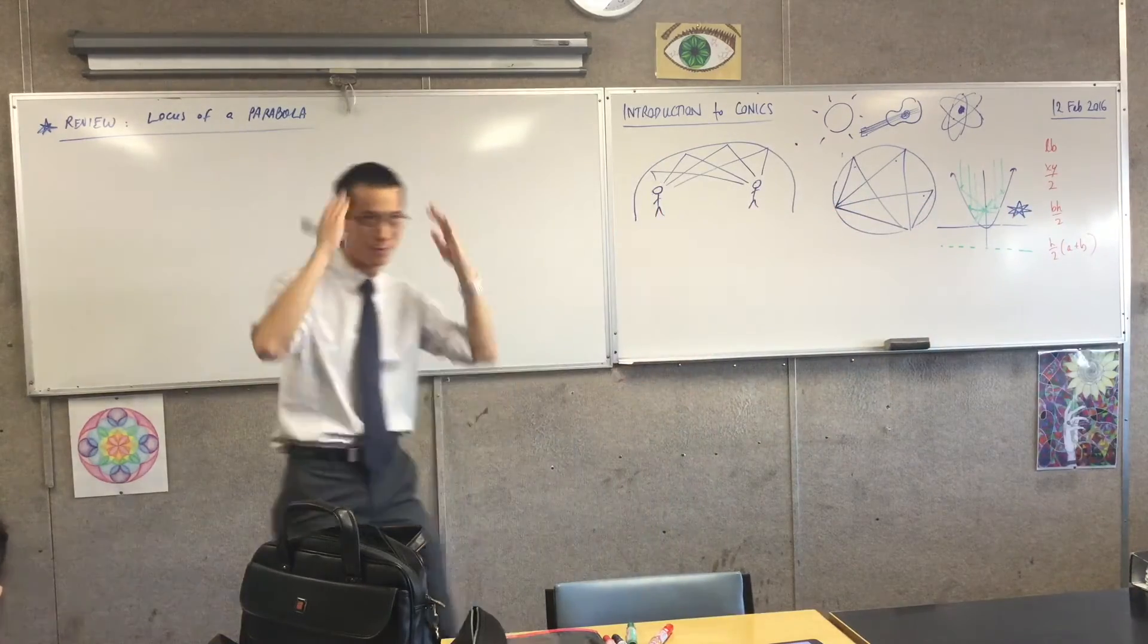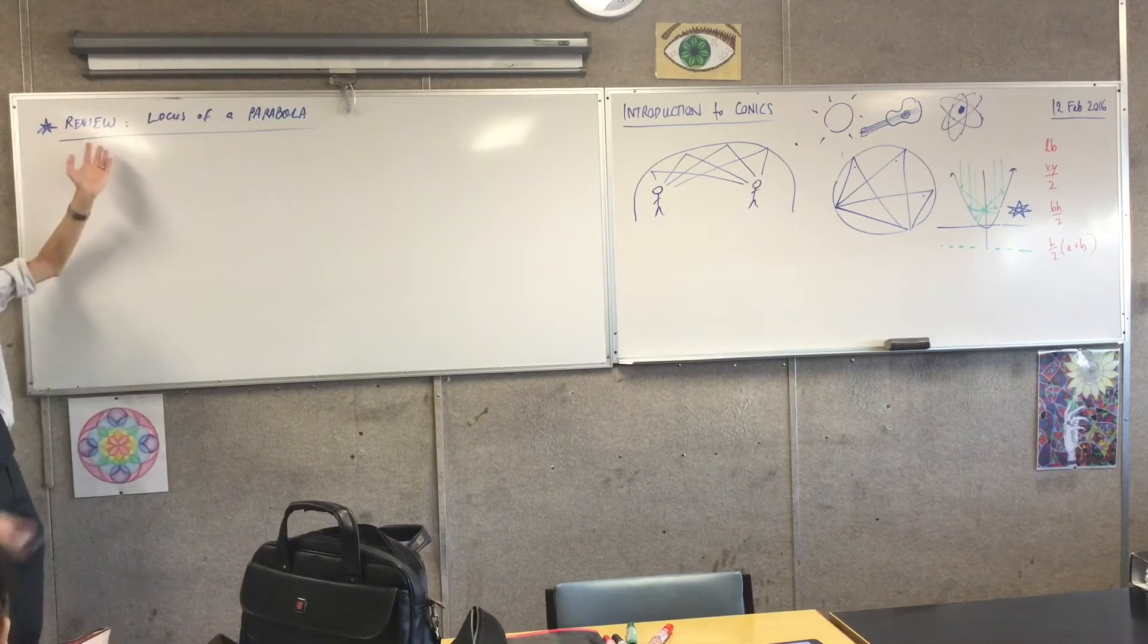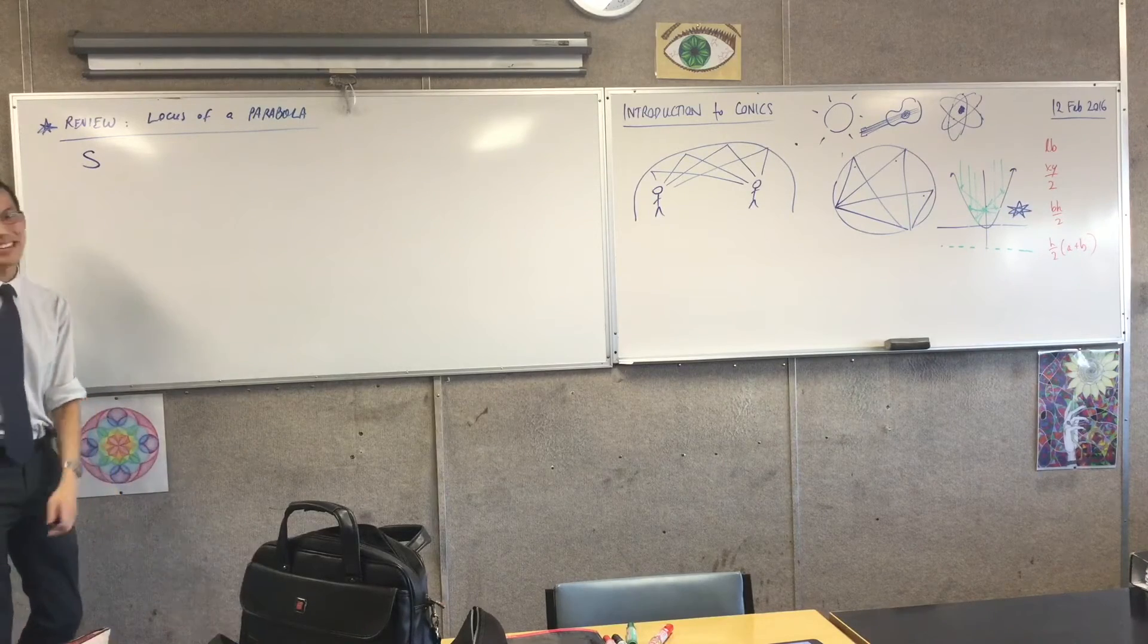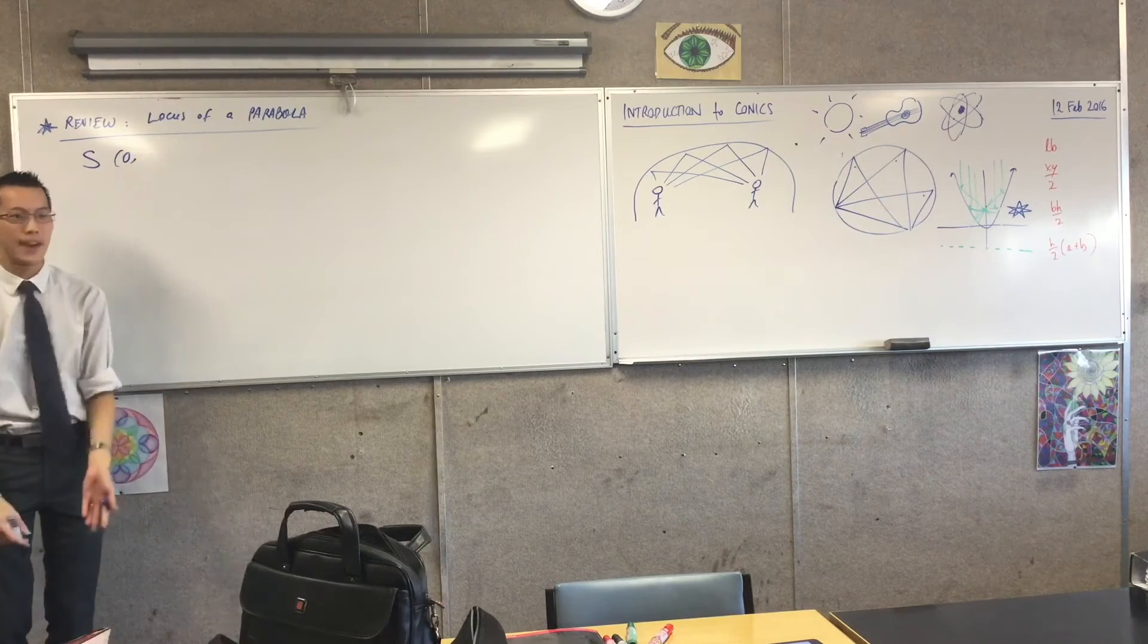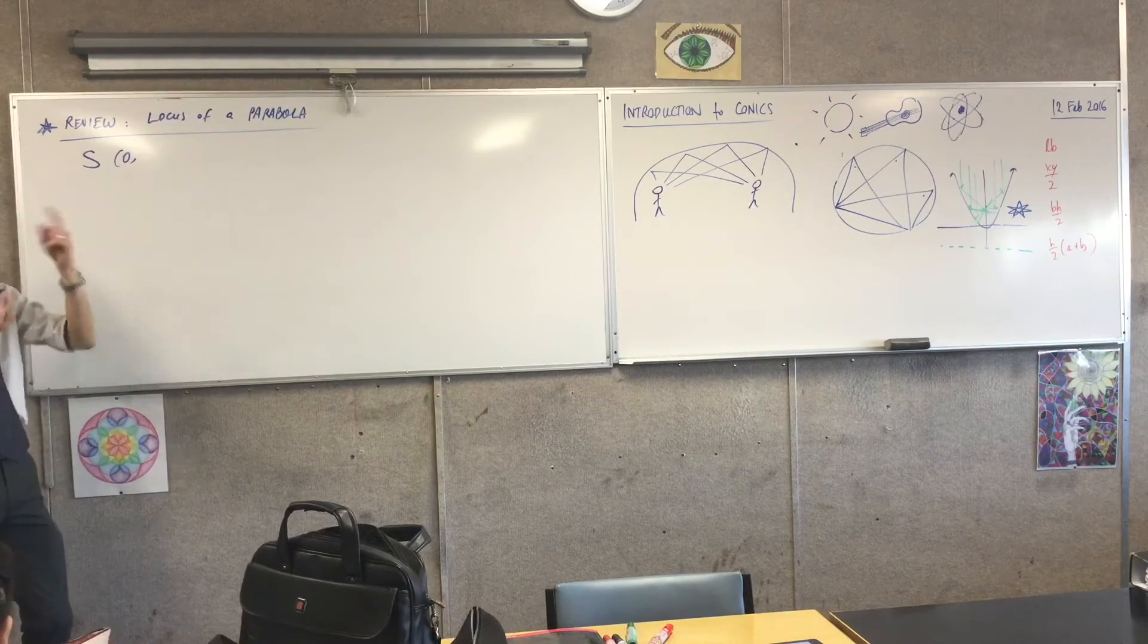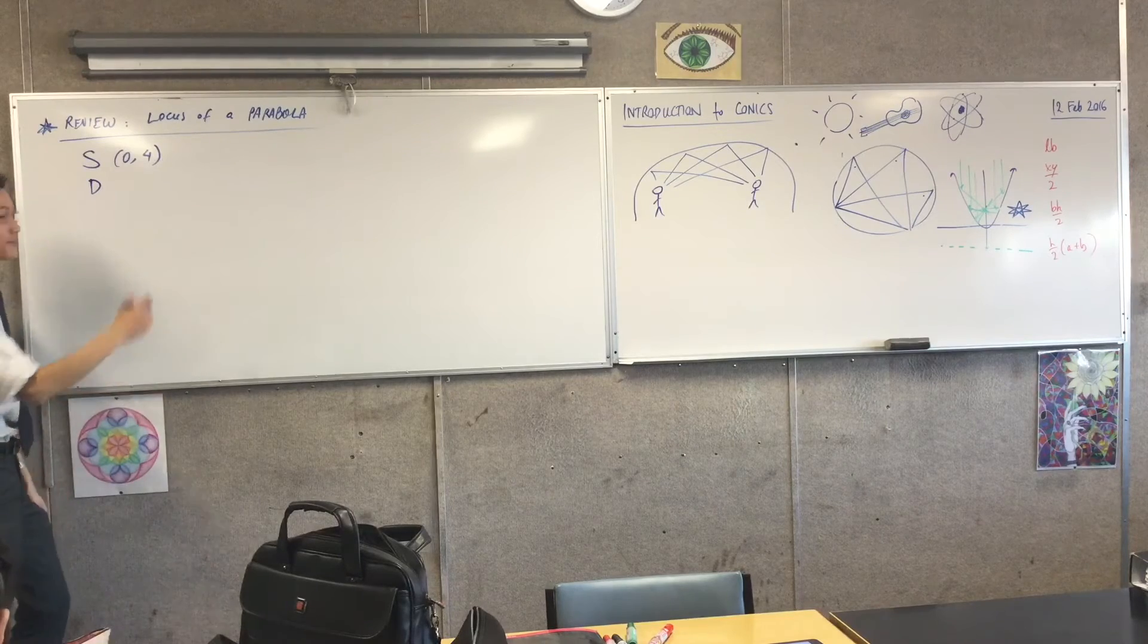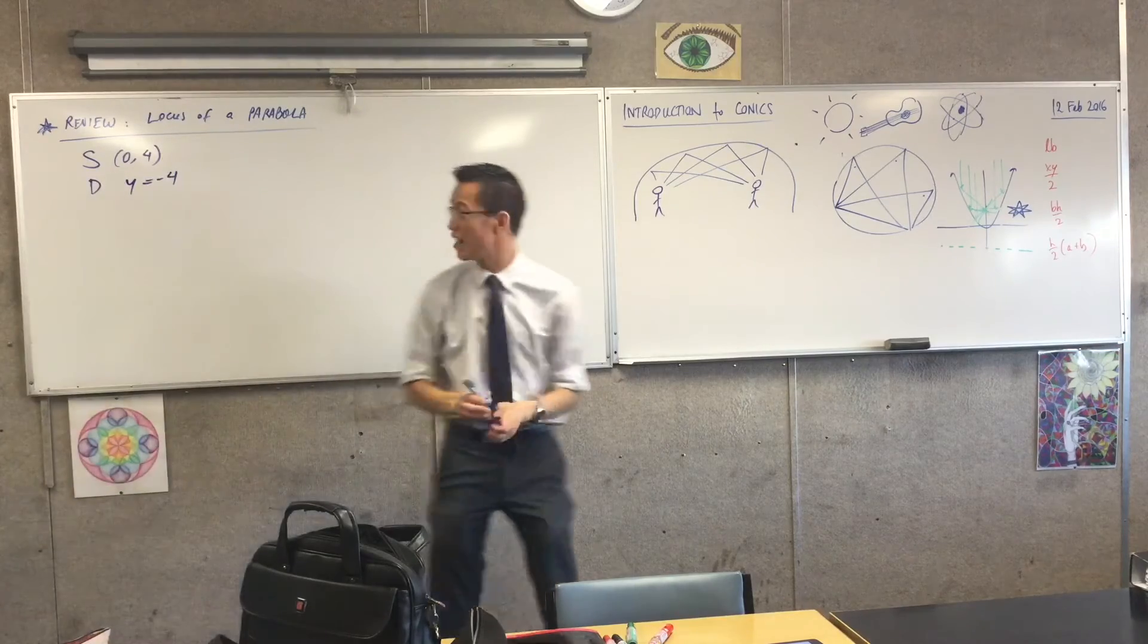Just to get our heads back to the space, because it's been a while, we've been very calculus heavy recently, let's pick an easy focus and an easy directrix. We usually call our focus S. What would be a nice easy focus? I'm going to go for (0,4), I think four is a really nice value. Where would be a nice convenient place to put the directrix? How about y equals negative 4.